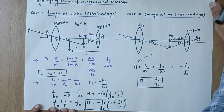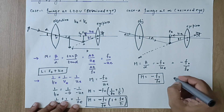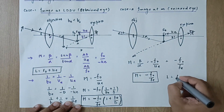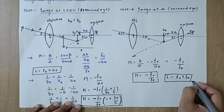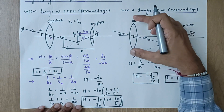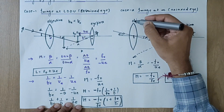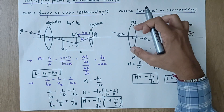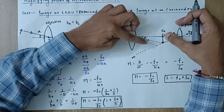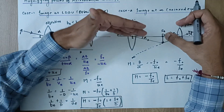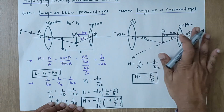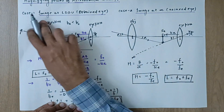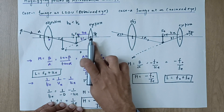The tube length in the relaxed eye case is fo + fe. There are some disadvantages of the astronomical telescope: the lenses are very heavy and costly because a very large diameter is required. There is also chromatic aberration — white light splits into seven colors with different focal lengths, producing a distorted image. To overcome these difficulties, mirrors are used in a reflecting telescope, which will be studied next. The refracting telescope uses lenses and refraction.